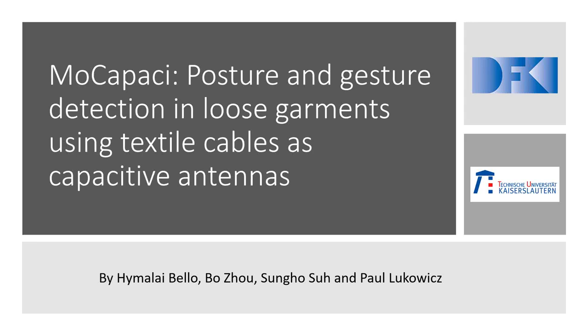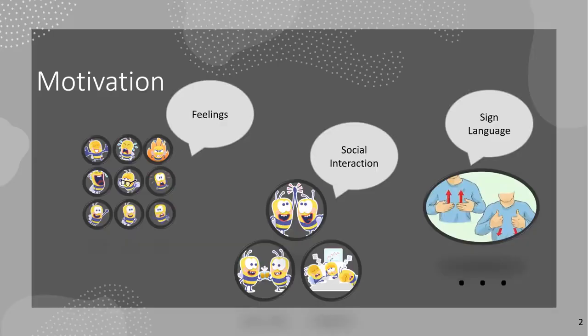We present to you MOCAPACIT, posture and gesture detection in loose garments using textile cables as capacity antennas. Body posture and gestures, BPG, can express how we feel and interact with others, show our personality and is also a key element in sign language.